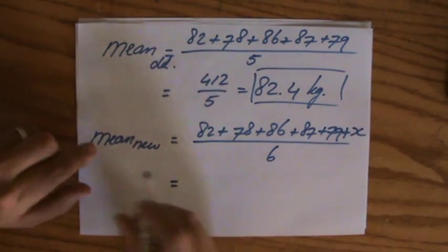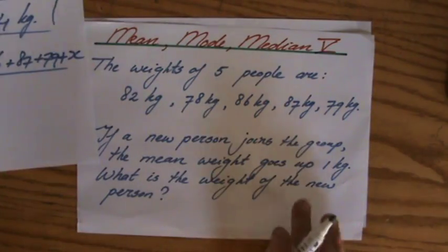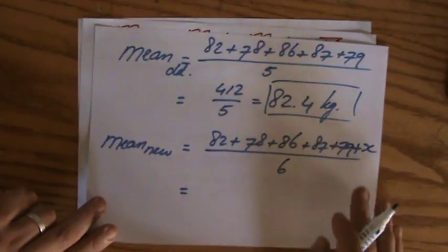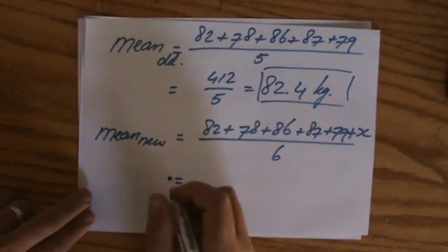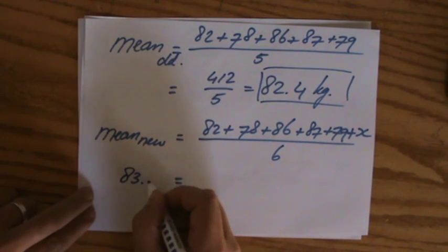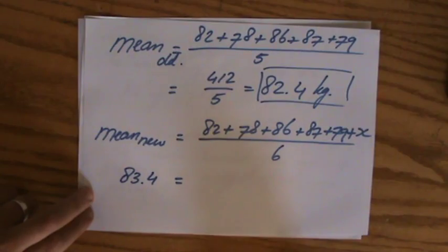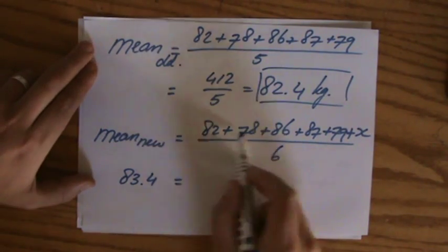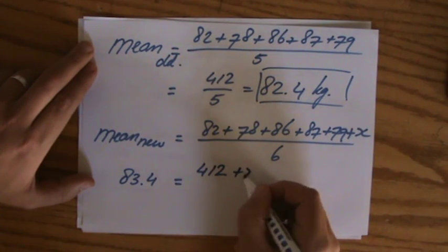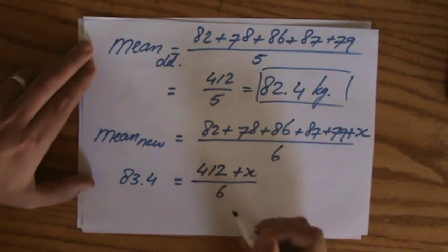Okay. And how much is that mean? The new mean? Well it is one kilo more than the old mean. And that one was 82.4. So the mean in the new situation is going to be 83.4 kilograms. Okay. That all together was 412. I'm going to put it in my calculator again. Plus x divided by 6.